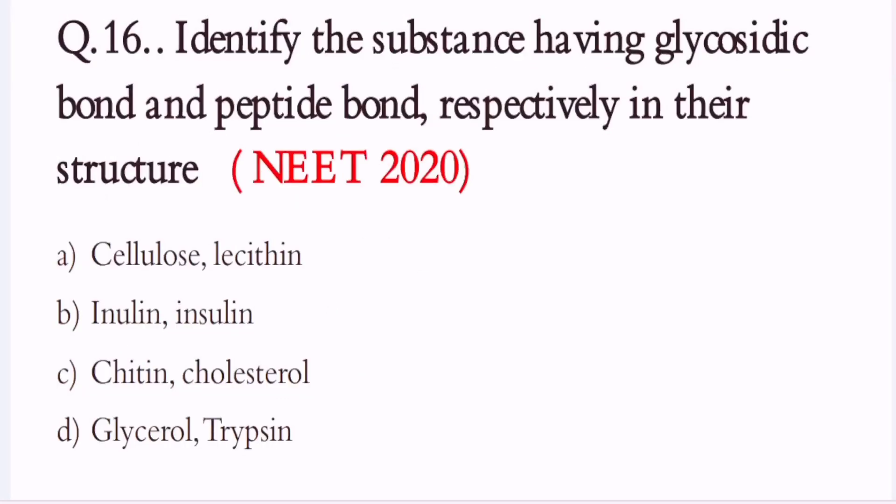Question 16. Identify the substance having glycosidic bond and peptide bond respectively in their structure. A. Cellulose lecithin. B. Inulin insulin. C. Chitin cholesterol. D. Glycerol trypsin. The correct option is B. Inulin and insulin.